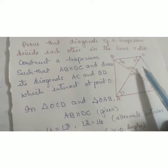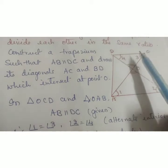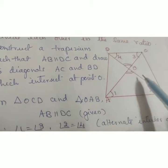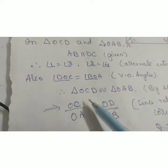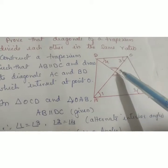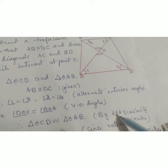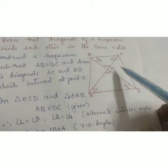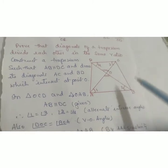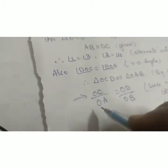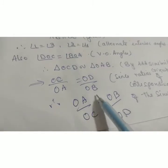Since AB is parallel to CD, in triangles OCD and OAB: angle 4 equals angle 2, angle 1 equals angle 3, and angle DOC equals angle AOB as vertically opposite angles. So three angles are equal, therefore triangle OCD is similar to triangle OAB by AAA similarity. Therefore OC by OA equals OD by OB, and taking reciprocals we get OA by OC equals OB by OD. Hence proved.